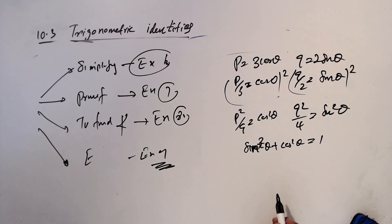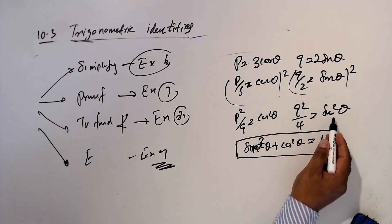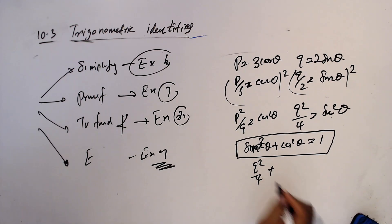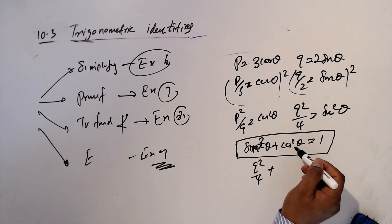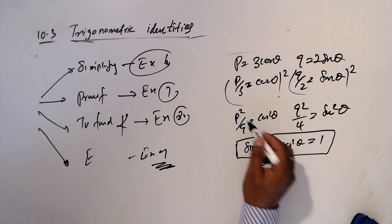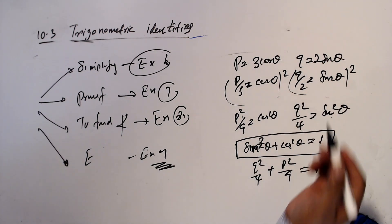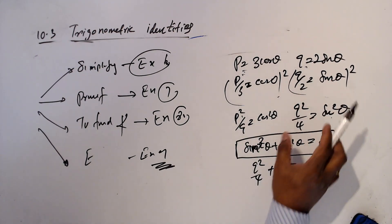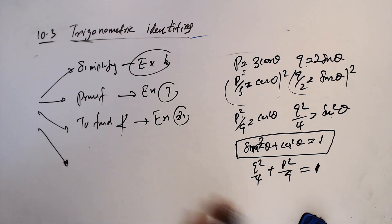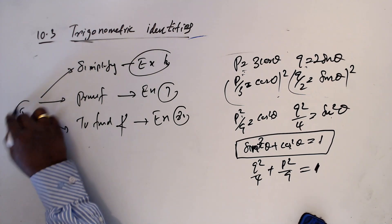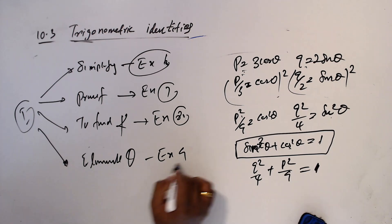Now this is the equation. So I can substitute instead of sin square theta, Q square over 4. Then I can substitute instead of cos square theta, P square over 9 and equal 1. So I eliminate theta here. I am building up a relationship by eliminating theta. So you can use this identity to eliminate theta for example 9.